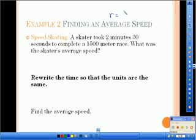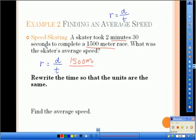Let's try an example of finding average speed. And we're going to use that formula R equals D over T, where R is the average speed. The skater took 2 minutes and 30 seconds to complete a 1500 meter race. What was the skater's average speed? First we're going to use our formula to find the speed. So I'm going to write R equals D over T. And then we're going to just fill in the things that we know. Now we know the distance is 1500 meters. So I'm going to put that in the numerator of my ratio, or my equation. The time is 2 minutes and 30 seconds, but we have a problem here. We have minutes and seconds. So what we need to do is rewrite the time so that the units are the same.